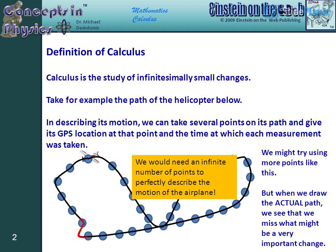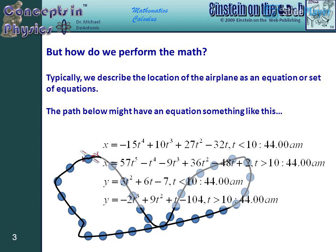We might try using more points like this, but when we draw the actual path, we see that we miss what might be a very important change. We would need an infinite number of points to perfectly describe the motion of the airplane, but how do we perform the math?